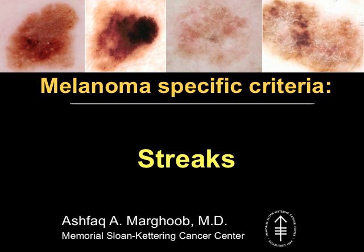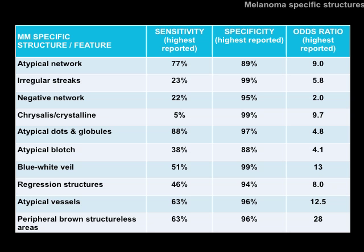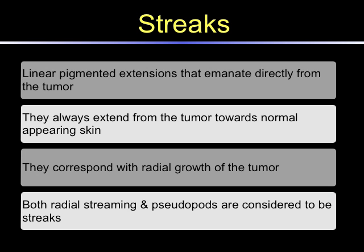Welcome to this podcast on streaks. Streaks are one of 10 melanoma-specific structures with a specificity of 99% and an odds ratio of almost 6 for melanoma. Streaks are defined as linear pigmented extensions that emanate directly from the tumor and always extend from the tumor towards normal uninvolved skin. They correspond with the radial growth of the tumor. Both radial streaming and pseudopods are considered to be streaks.